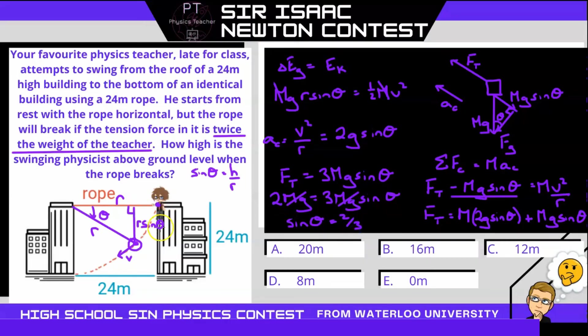Well, if our physics teacher falls a height of r sine theta and sine theta is two-thirds, then that means he's falling a height of two-thirds r, where r is 24 meters. So that's a total height of 16 meters. So if this portion from here to here is 16 meters and the whole height is 24 meters, well then it turns out he is 8 meters above the ground. Our answer is D.